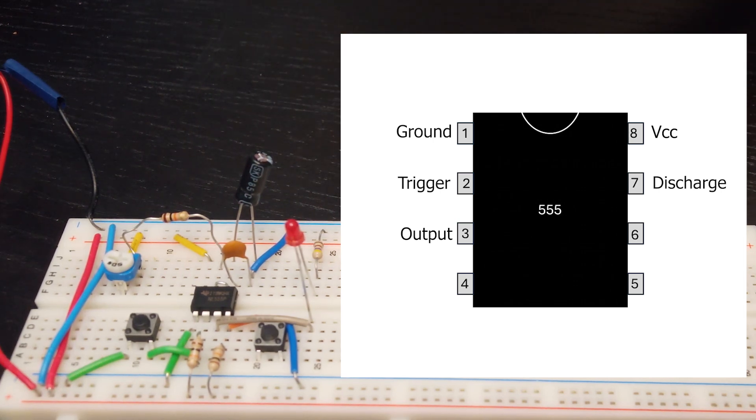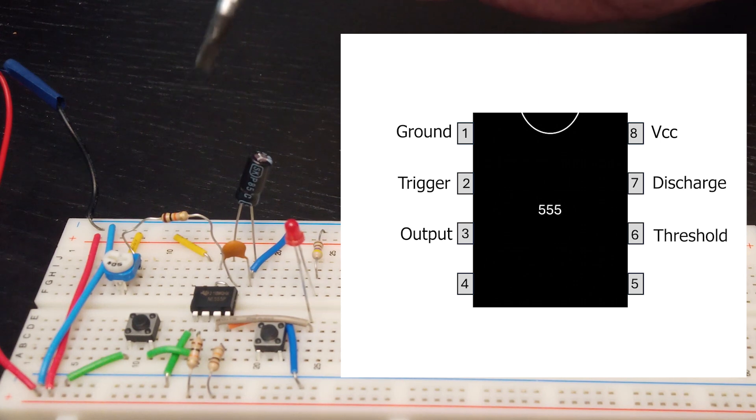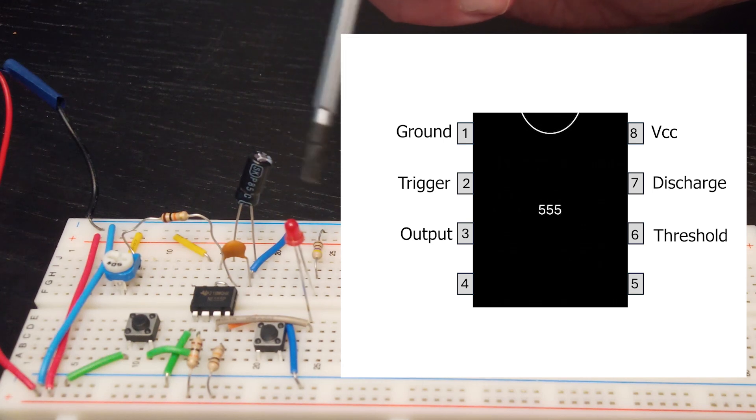Now we come back to pin six which is the threshold pin. So as the capacitor charges, the voltage present at the threshold pin will begin to rise. And when it reaches two thirds of the supply voltage the 555 will do two things. First it will drive the output pin low again, thus turning off the LED in this case. Second, it will reconnect the discharge pin to ground, thus reintroducing a path for this capacitor to discharge and getting us ready again for the next time that we want to trigger the circuit.